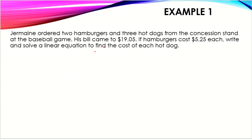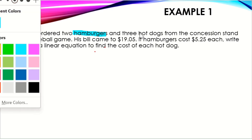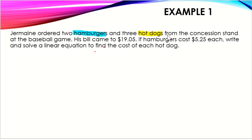Let's solve some word problems. Our first example says: Jermaine ordered two hamburgers and three hot dogs. We can see we have two different objects — hamburgers and hot dogs. From the concession stand at the baseball game, his bill came to $19.05. Hamburgers cost $5.25 each. Write and solve a linear equation to find the cost of each hot dog.